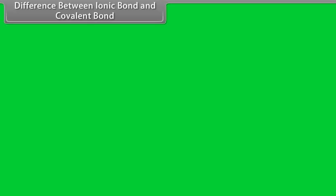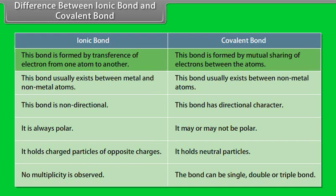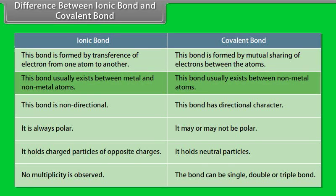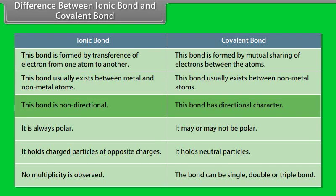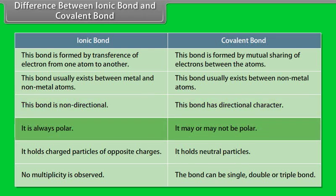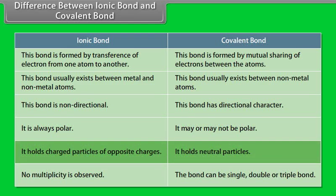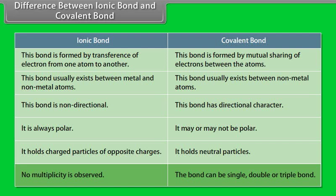Differences between ionic bond and covalent bond: ionic bond is formed by transference of electrons, whereas covalent bond is formed by mutual sharing. Ionic bond usually exists between metal and non-metal atoms, whereas covalent bond usually exists between non-metal atoms. Ionic bond is non-directional, whereas covalent bond has directional character. Ionic bond is always polar, whereas covalent bond may or may not be polar. Ionic bond holds charged particles of opposite charges, whereas covalent bond holds neutral particles. No multiplicity is observed in ionic bond, whereas covalent bond can be single, double, or triple bond.